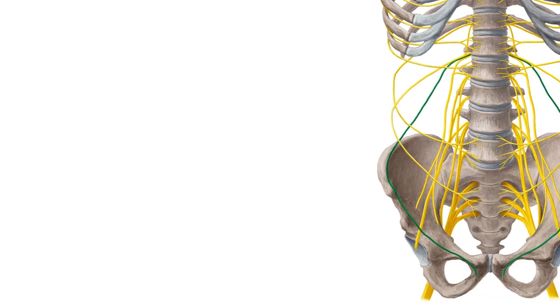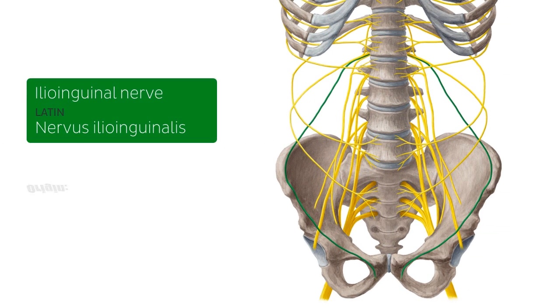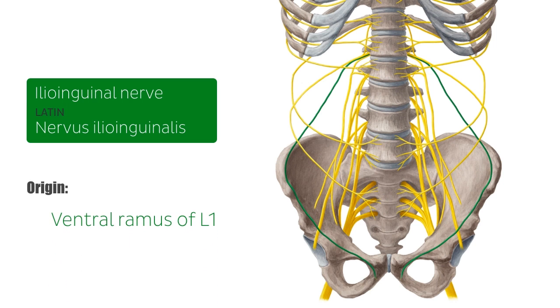Hey everyone, this is Nicole from KenHub and in this tutorial we will be discussing the ilioinguinal nerve. The ilioinguinal nerve, which is shown here in green, arises from the ventral ramus of L1, which is the first lumbar spinal nerve of the lumbar plexus.